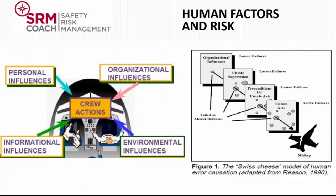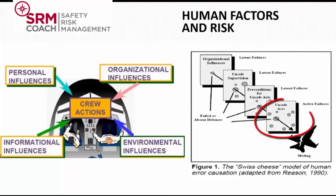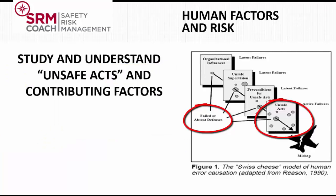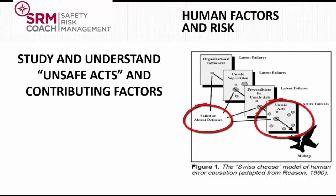From the organizational accident model, we can see that unsafe acts play a role in accident causation. We need to understand why these unsafe acts happen to our people. This is the study of human factors. Human factors studies how the environment of the organization influences human performance. By understanding and improving the contributing factors that can provoke errors and violations, we can improve our system and reduce risk.